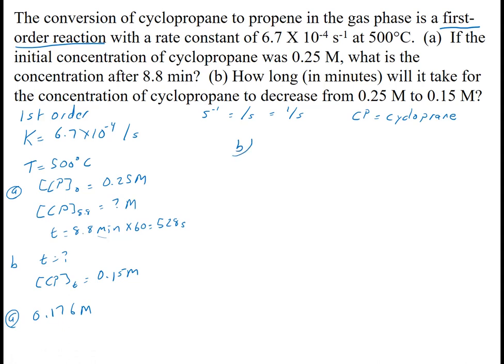So for B, now it wants to know what the time is. So it's the same equation. Natural log of the concentration at time T over the initial concentration is negative kT. So it's natural log of 0.15 over my initial concentration is still 0.25, is negative 6.7 times 10 to the minus 4th T.